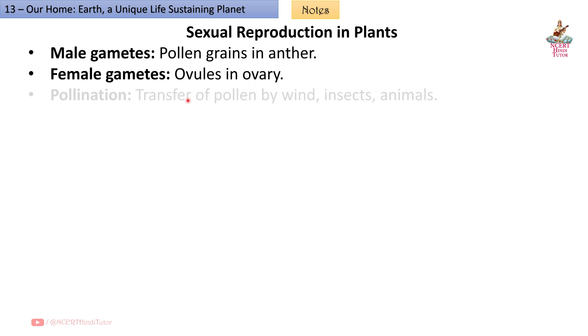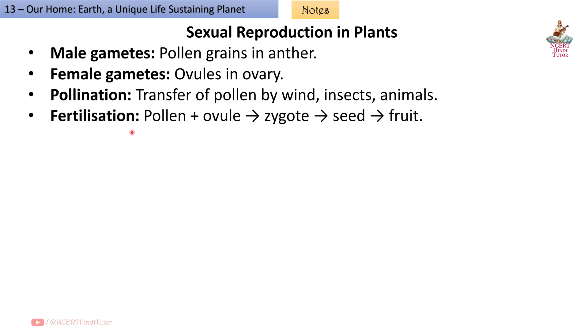Sexual reproduction in plants: Male gametes are pollen grains in the anther. Female gametes are ovules in the ovary. Pollination is the transfer of pollen by wind, insects, or animals. Fertilization: pollen plus ovule creates a zygote, then seed, and then fruit. Seed dispersal by animals, wind, or water ensures plant spread.